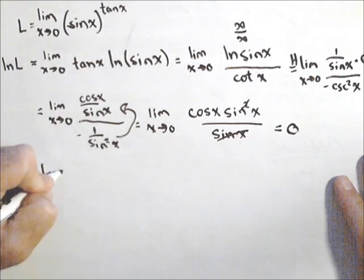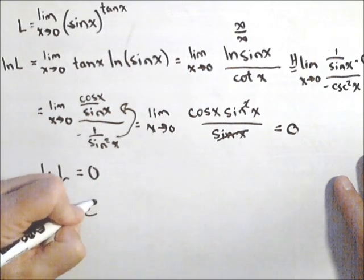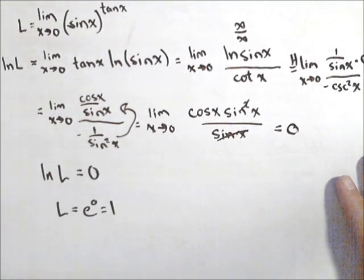Now, what we have is that the natural log of L equals zero. Therefore, L equals e to the zero or one.